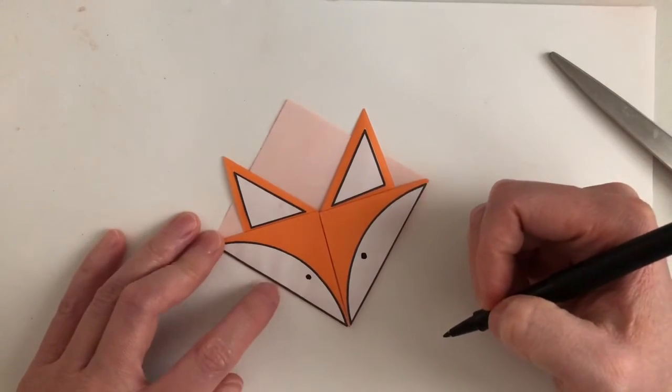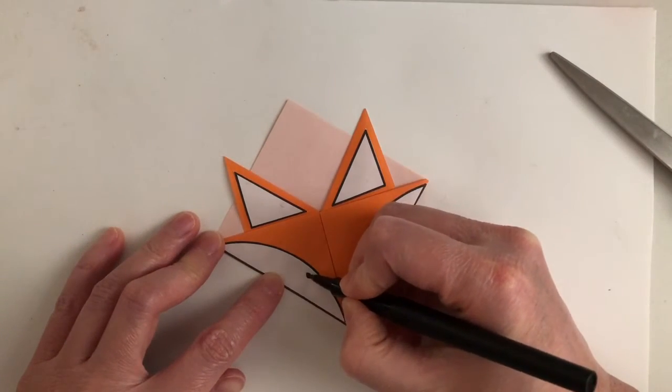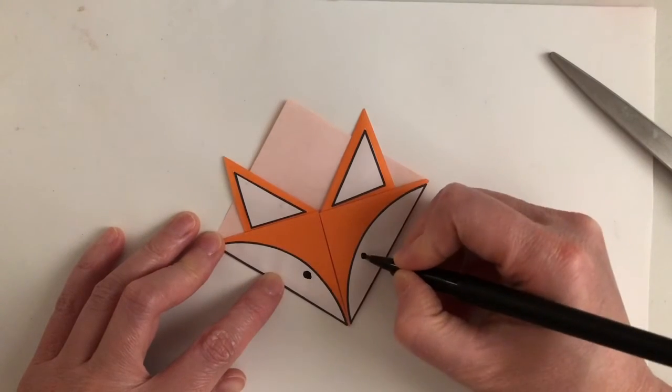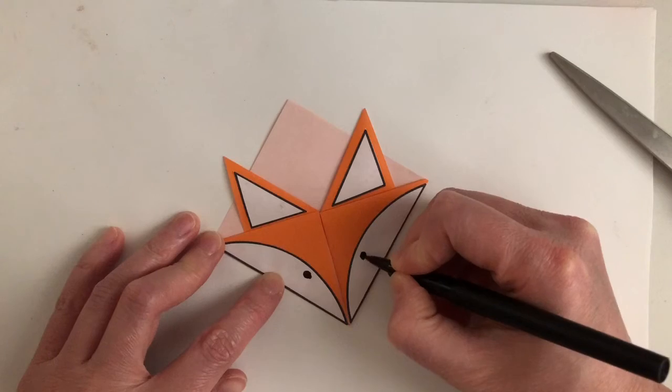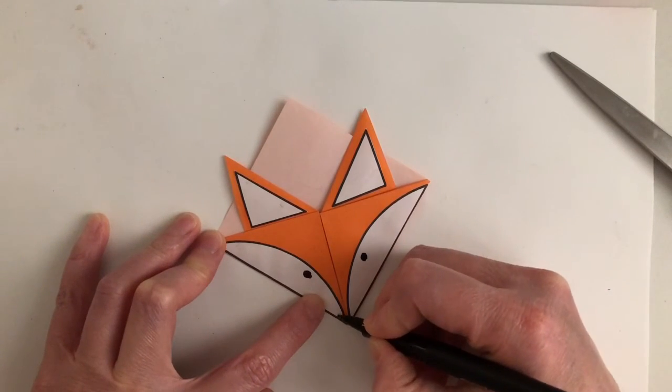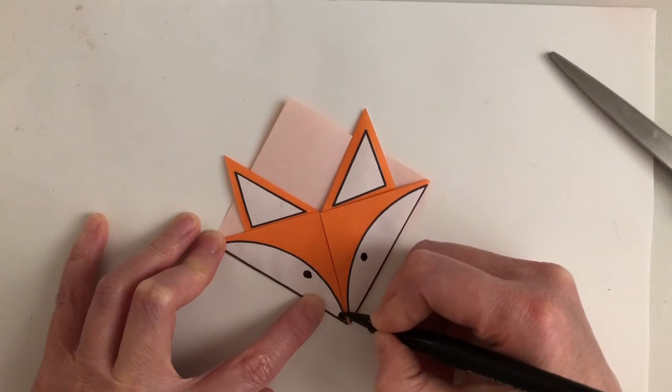A little crooked, and try to fix that. Maybe you'll be more careful and your fox eyes will be more symmetrical. And then we're going to take our felt tip marker and draw in the nose.